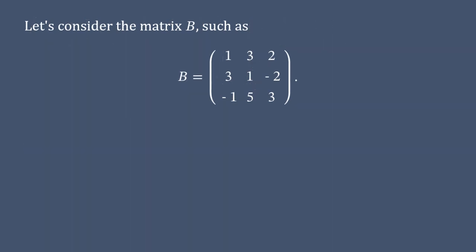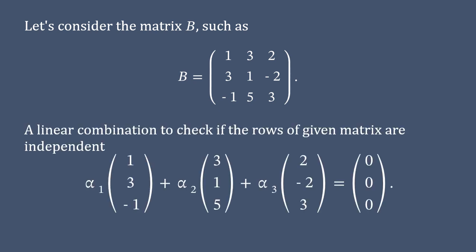Now, let's consider other matrix, which is denoted by B. In order to check if the rows of given matrix are linearly independent, we derive its linear combination in the same way.